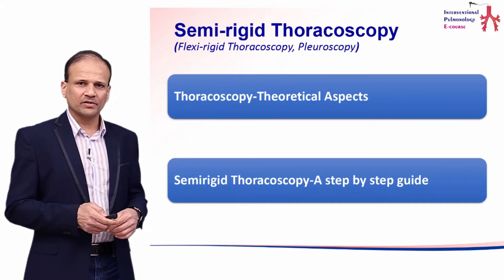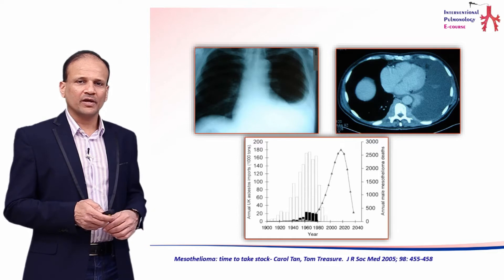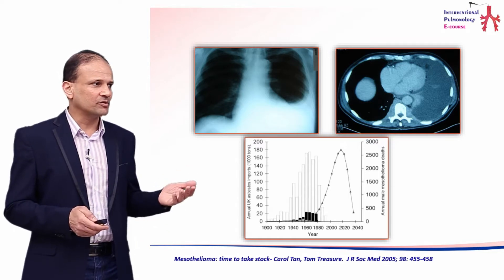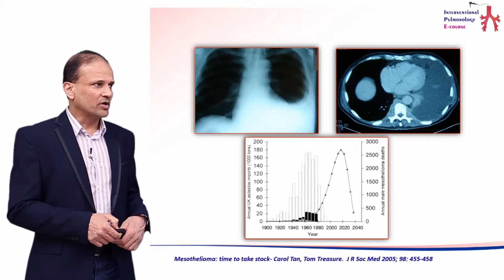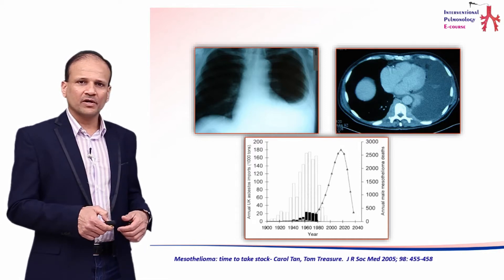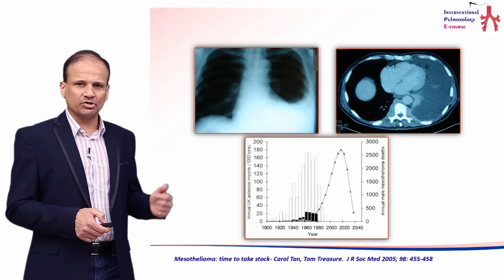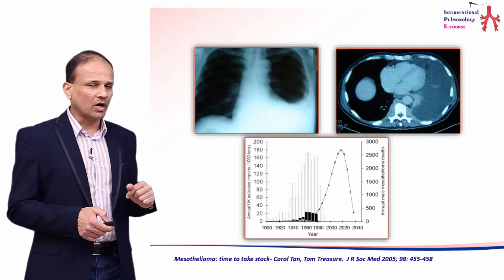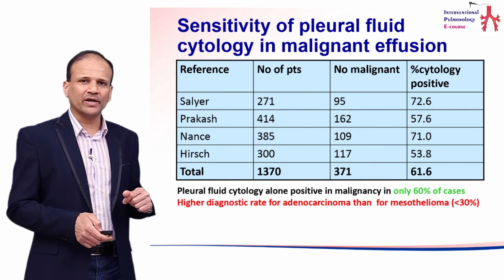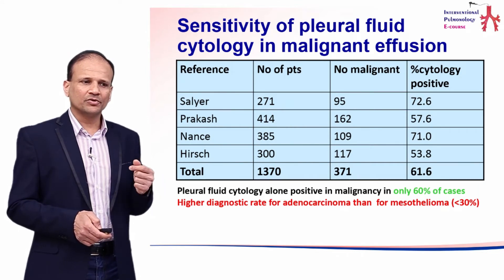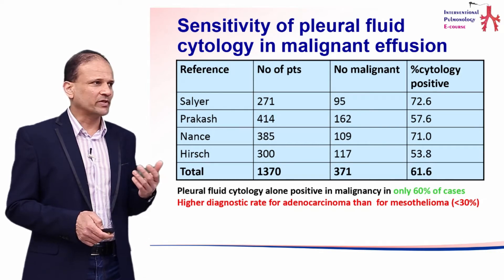The reason for the development of thoracoscopy is the investigation and management of pleural effusion, which is a very common problem. Pleural effusions are going up in incidence over the years, partly because of malignant conditions such as mesothelioma but also common conditions such as tuberculosis, and there is a need to get adequate samples to confirm the diagnosis with a diagnostic yield of nearly 100 percent.